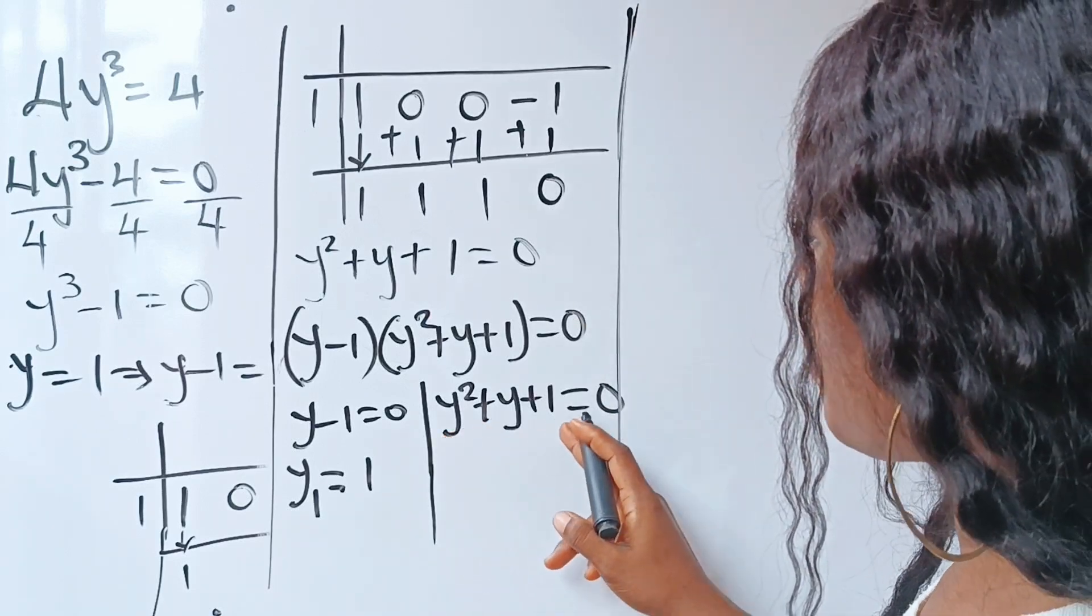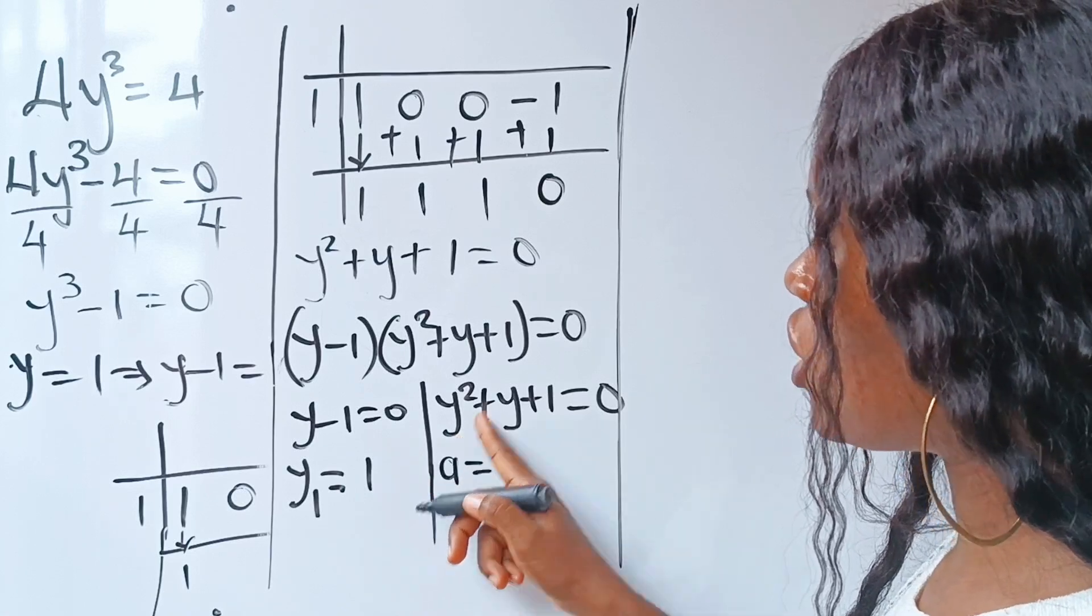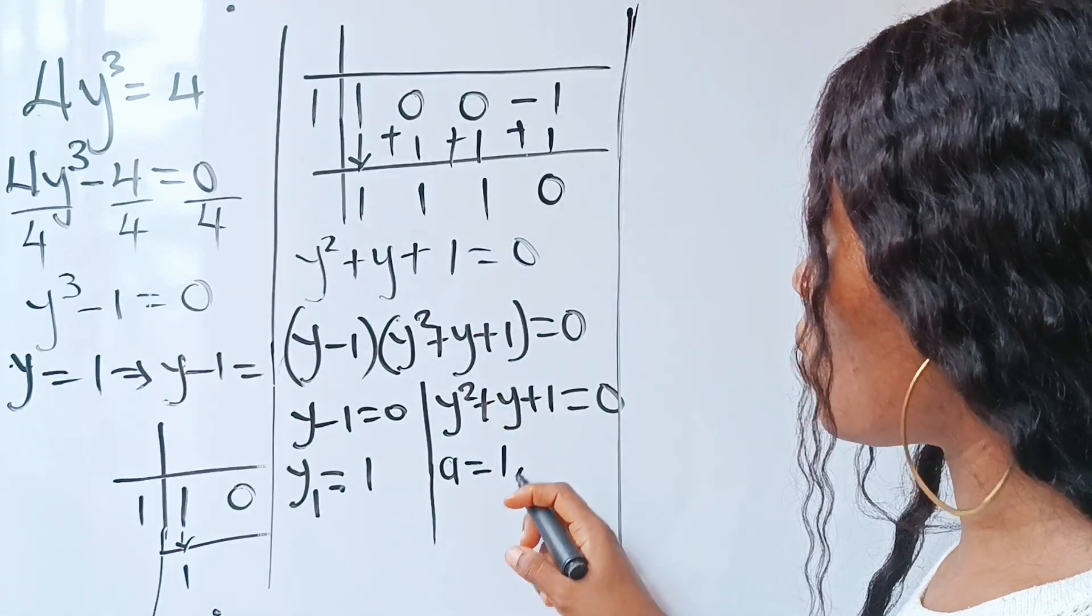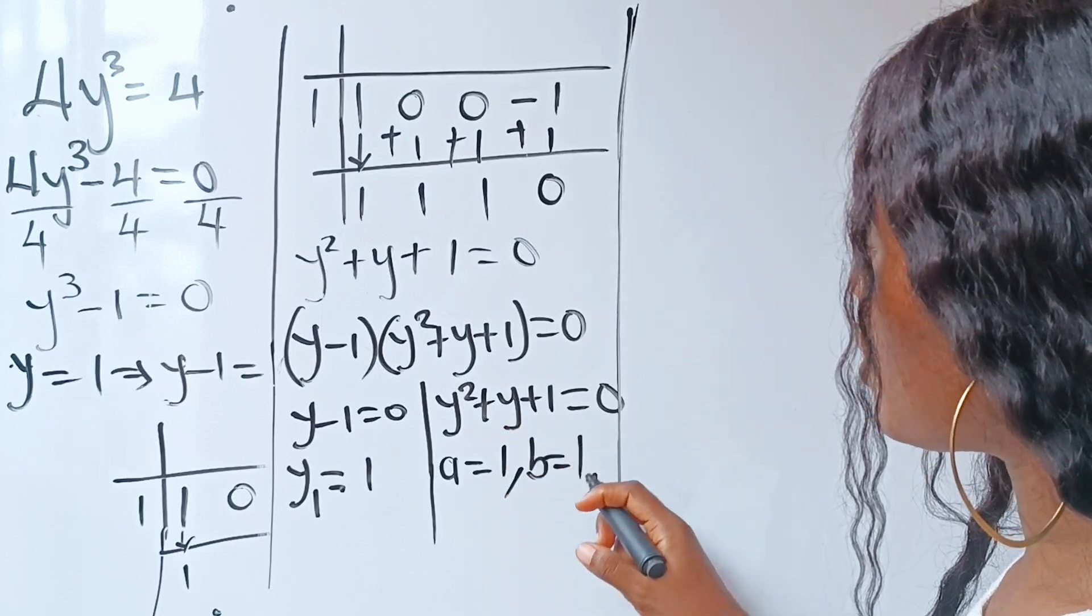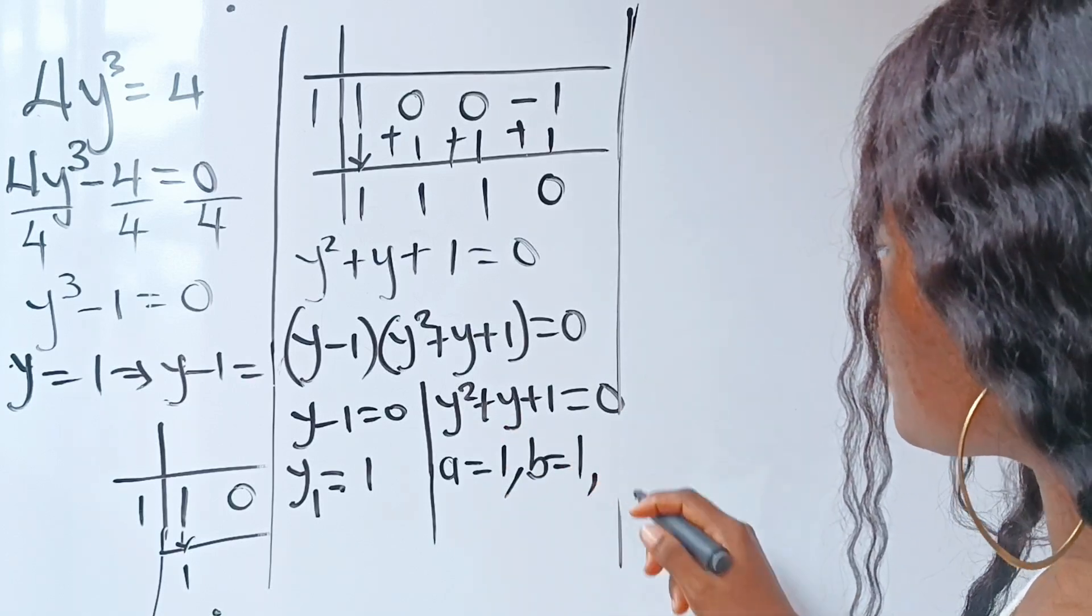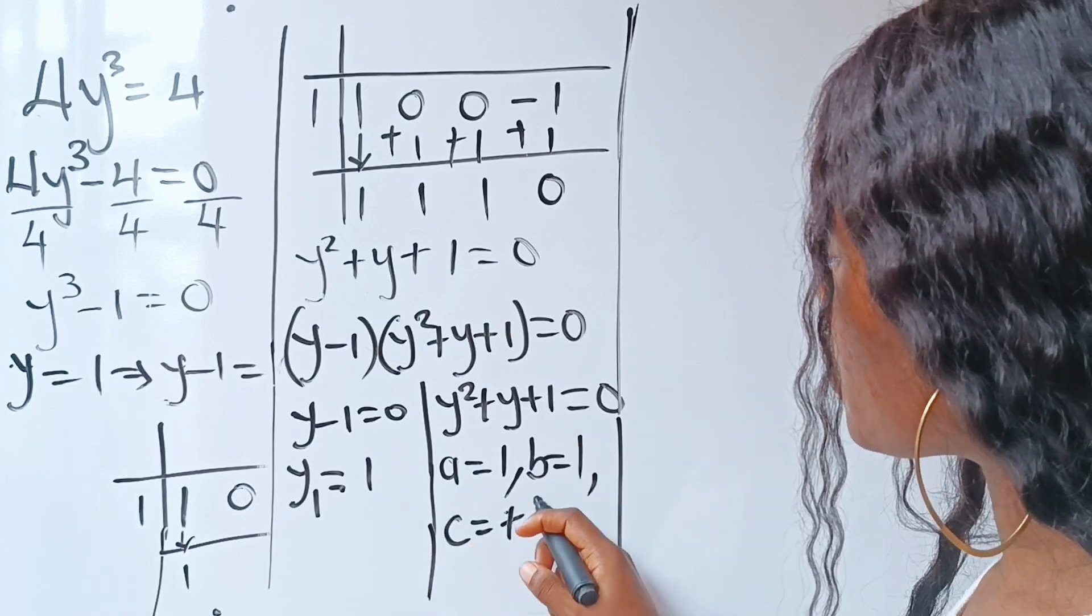We have y² + y + 1 = 0. Here our a is the coefficient of y², which is 1. Our b is the coefficient of y, which is 1. And our c is our constant, which is plus 1.